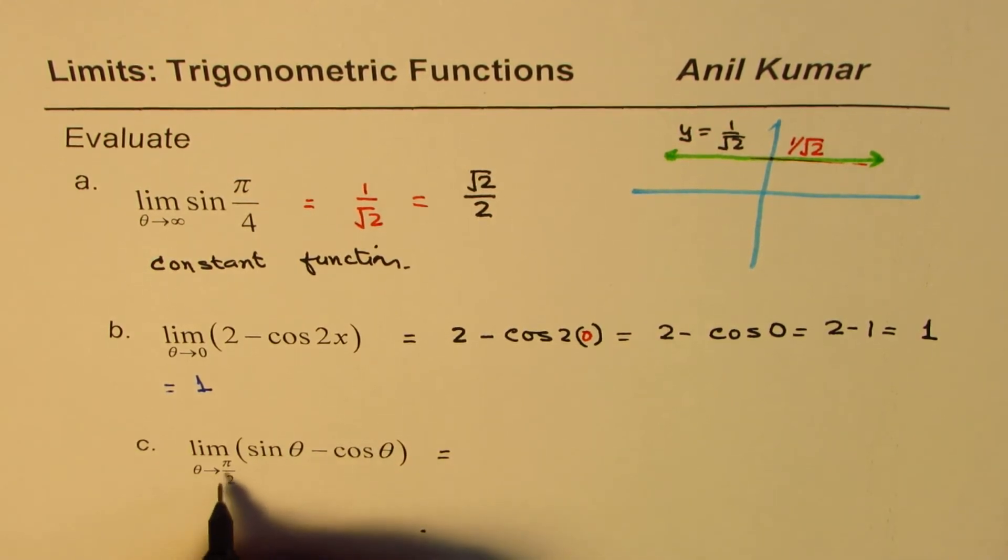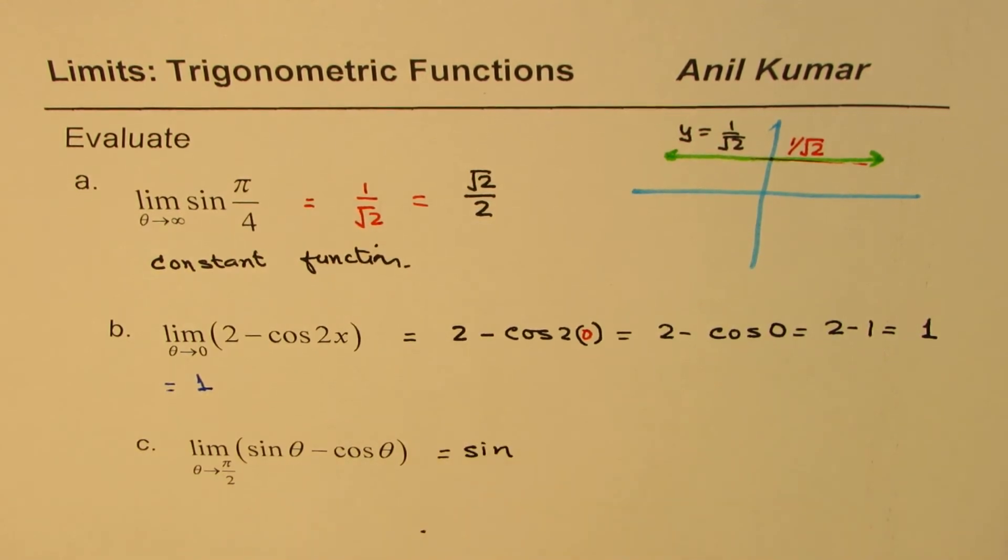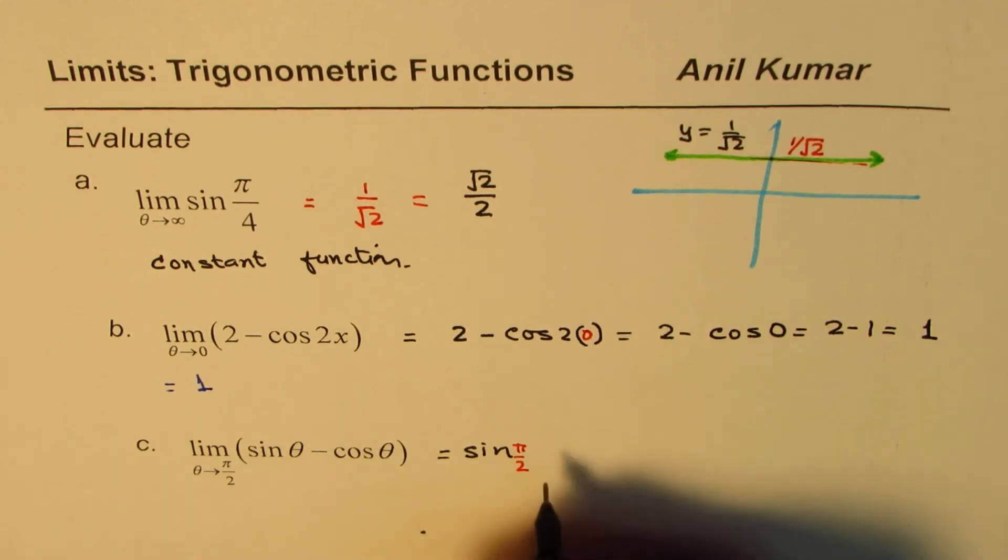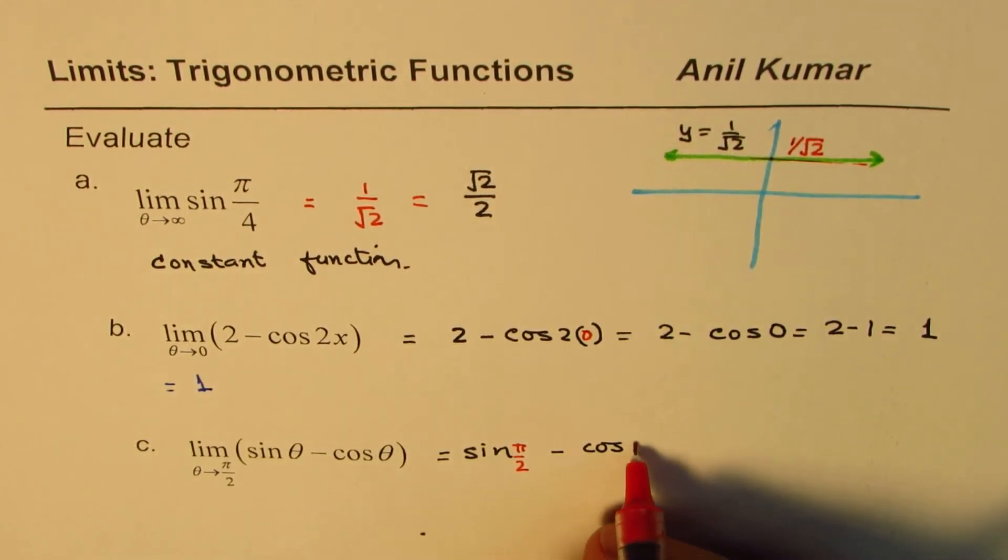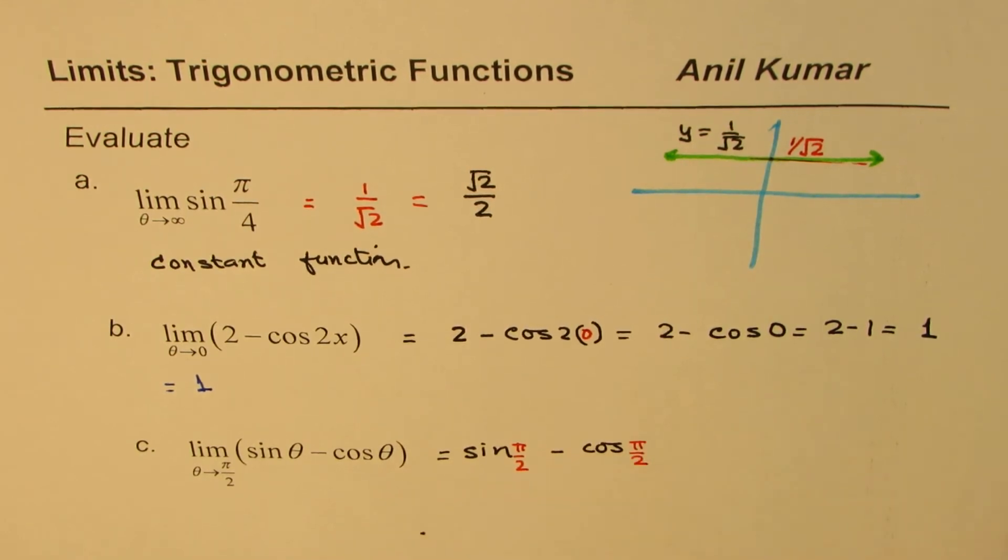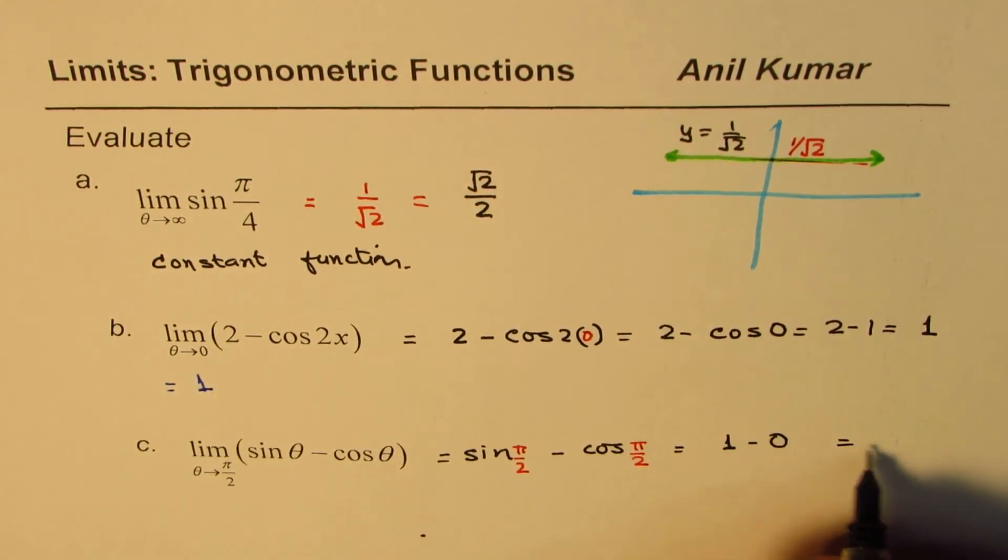So limit when theta approaches pi by 2 for sine theta minus cos theta. Let's substitute. What do we get? We get sine of pi by 2 minus cos of pi by 2. Now what is sine of pi by 2? Sine of pi by 2 is 1 and cos of pi by 2 is 0.